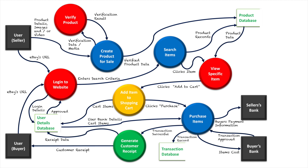Once a person buys the product, as mentioned in the context diagram, the buyer's payment information is sent to the seller's bank. The seller's bank then gives a confirmation that the product has been purchased, completing the selling flow.